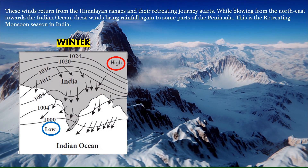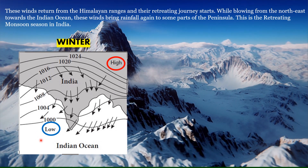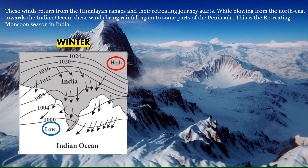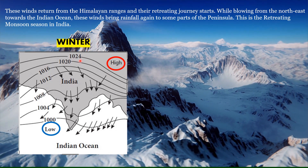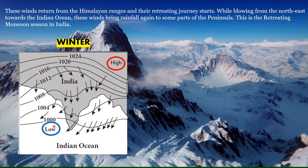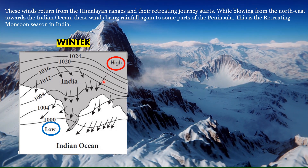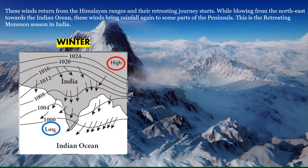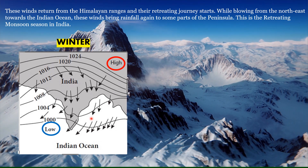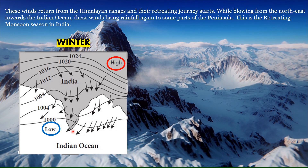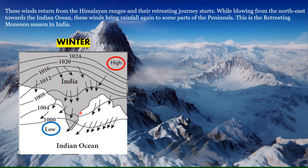In winter, land gets cooled faster while water gets cooled slowly. So a low pressure zone is created over the Indian Ocean, whereas high pressure develops over the Indian subcontinent. Winds flow from the high pressure area on the subcontinent towards the Indian Ocean. Since these winds move from land to sea they are dry, but as they pass through the Bay of Bengal their moisture increases, and they give rains to parts of peninsular India — especially Tamil Nadu and Andhra Pradesh.